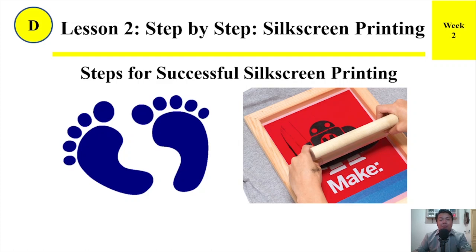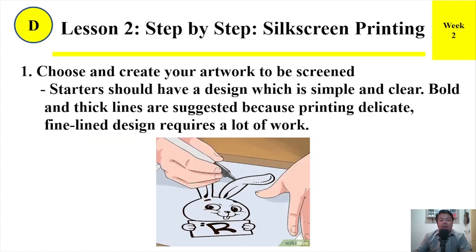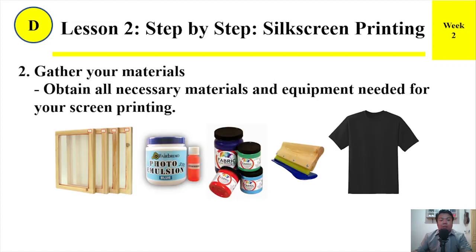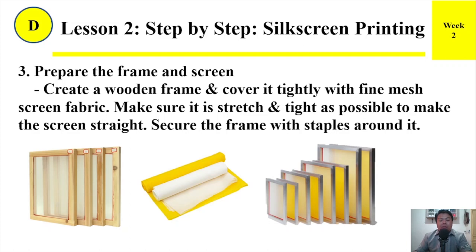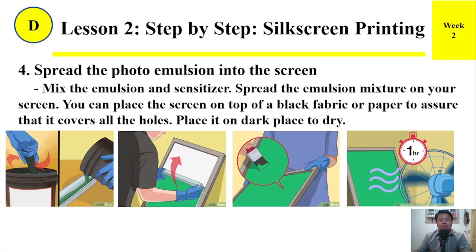Steps for successful silkscreen printing. Step 1: Choose and create your artwork to be screened. Starters should have a design which is simple and clear. Bold and thick lines are suggested because printing delicate fine line designs requires a lot of work. Step 2: Gather your materials — obtain all necessary materials and equipment needed for your screen printing. Step 3: Prepare the frame and screen. Create a wooden frame and cover it tightly with fine mesh screen fabric. Make sure it is stretched and as tight as possible to make the screen straight. Secure the frame with staples around it.